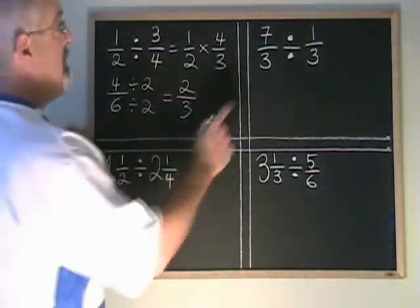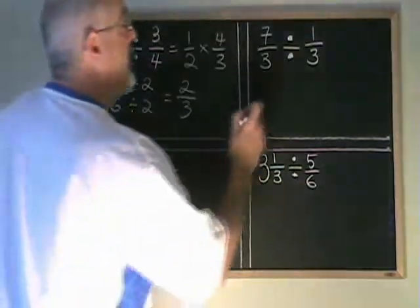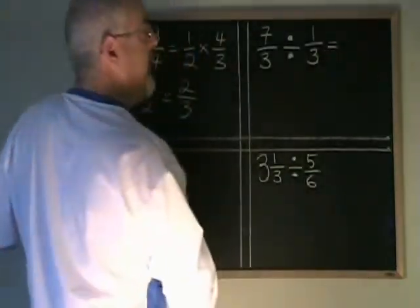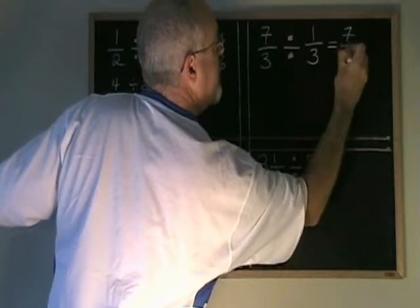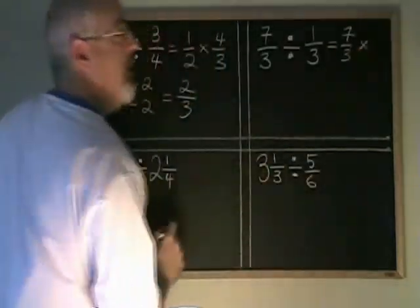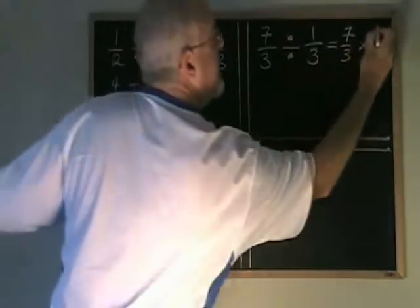Let's look at this one. 7 thirds divided by 1 third. I keep the first fraction the same. I multiply instead and I turn the second fraction upside down.